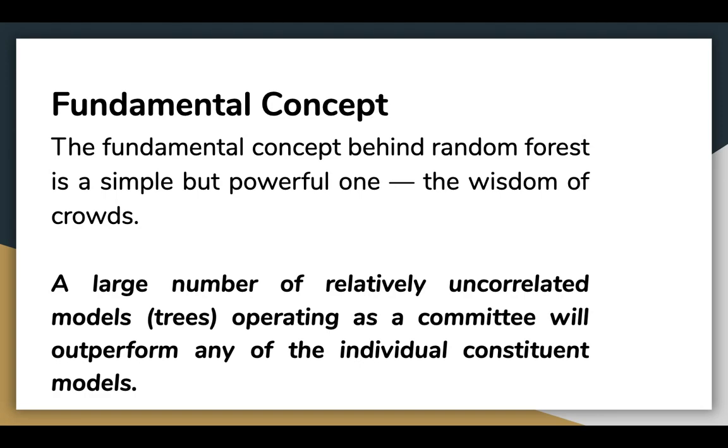The low correlation between models is the key. The reason for this wonderful effect is that the trees protect each other from individual errors. While some trees may be wrong, many other trees will be right, so as a group, the trees are able to move in the correct direction.